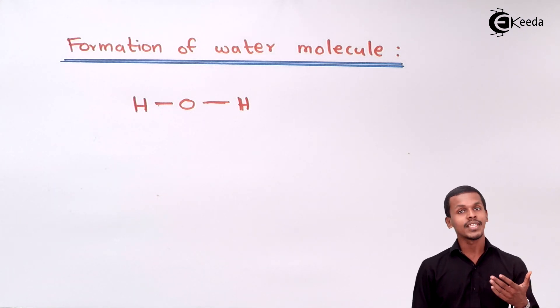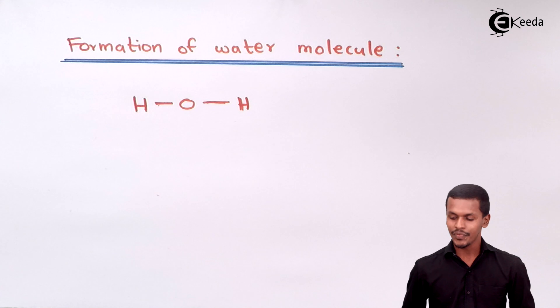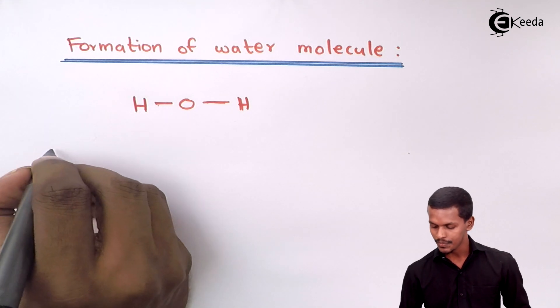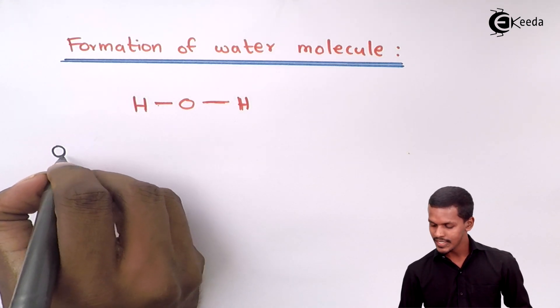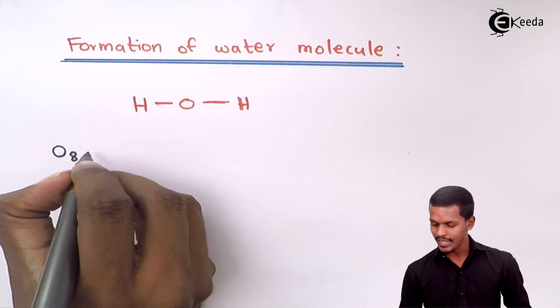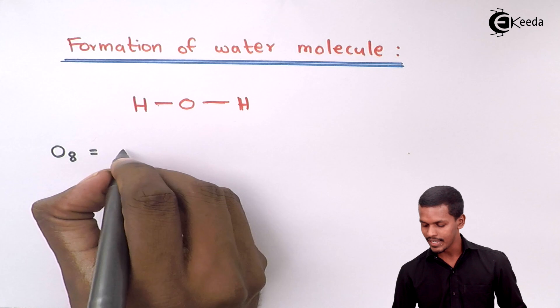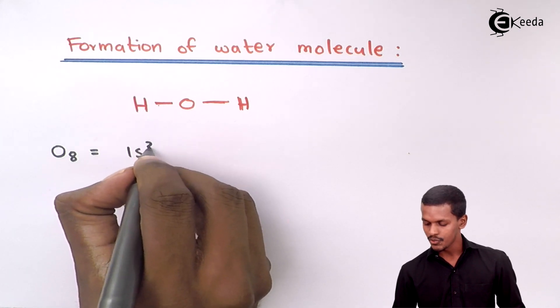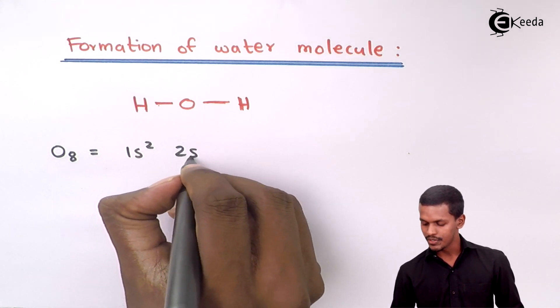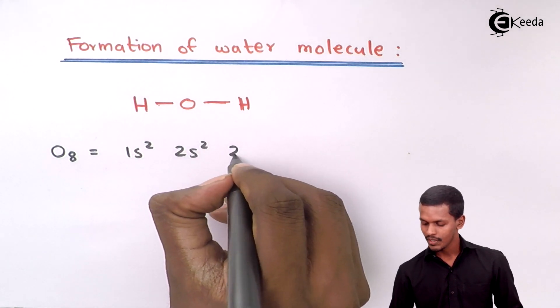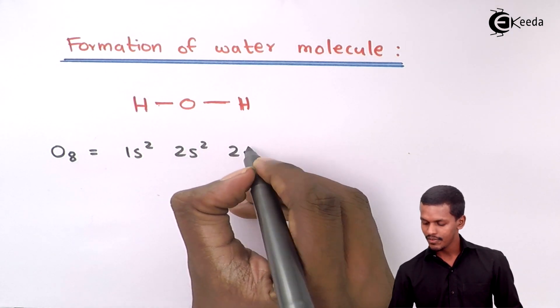Talking about the electronic configuration of oxygen, it can be written as: 1s², 2s², 2p⁴.